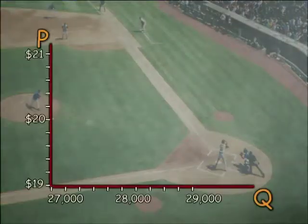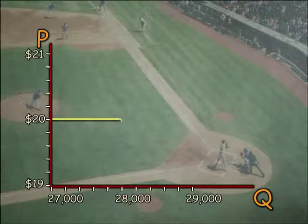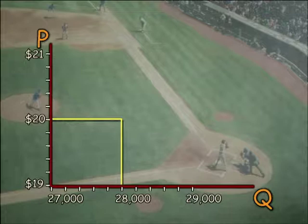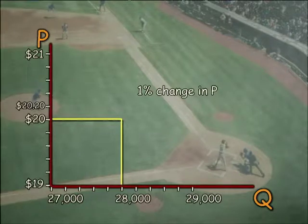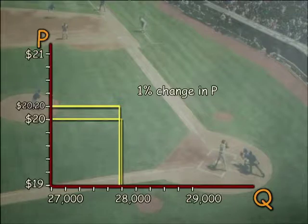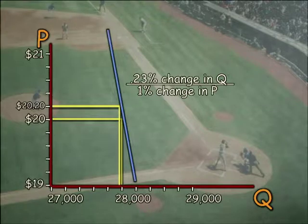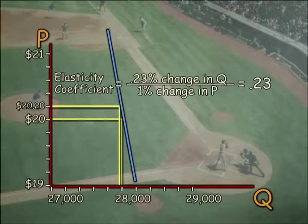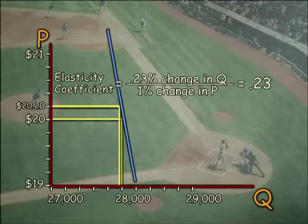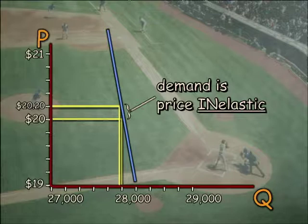In 2003, the average ticket price was about $20, with average attendance about 28,000 people per game. If the league raised the price to $20.20 — a 1 percent price increase — ticket sales would drop by about 64 fans per game, a change of just under a quarter of a percent. Quantity changes less than price in this case, resulting in an elasticity coefficient of 0.23. An elasticity coefficient of less than one means inelastic, so at current prices the demand for baseball tickets is price inelastic.